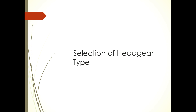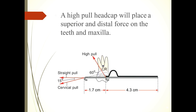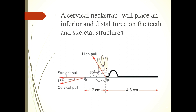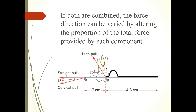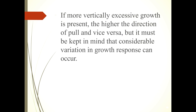Selection of Headgear Type: A high pull head cap will place a superior and distal force on the teeth and maxilla. A cervical neck strap will place an inferior and distal force on the teeth and skeletal structures. If both are combined, the force direction can be varied by altering the proportion of the total force provided by each component. If more vertically excessive growth is present, the higher the direction of pull, and vice versa.